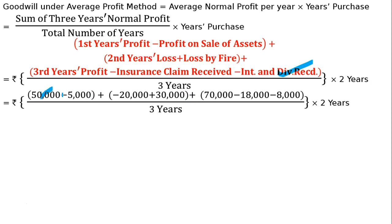So from the first year's $50,000 profit, we deduct $5,000 (profit on sale of fixed assets). Second year had a loss of $20,000; since loss by fire was already a minus item, we add it back, making it a profit of $10,000. Third year profit of $70,000: we deduct insurance claim received and interest & dividend received (non-operating income). Adding up 3 years of normal profit and dividing by 3 gives average normal profit per year. Multiplied by 2 years purchase, we get the goodwill of the firm.